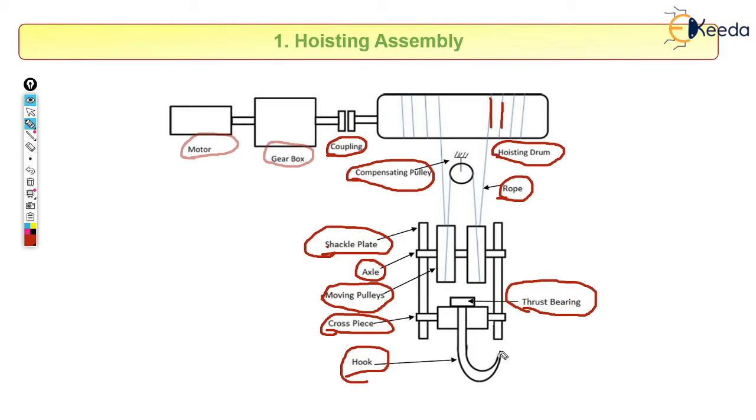The thrust bearing allows the hook to rotate. It has a particular rotation at a lesser rpm, that is why we are using thrust bearing not ball bearings. This is the general view of hoisting assembly, and through this module we are going to understand the design procedure of each and everything and how we can select it.